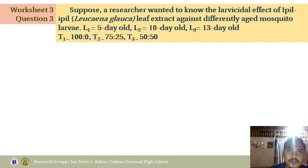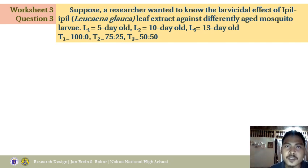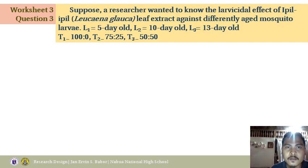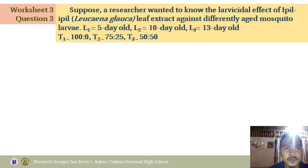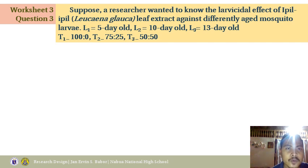Now for the last question: suppose a researcher wanted to know the larvicidal effect of ipil-ipil leaf extract against differently aged mosquito larvae. There are 3 age variations: 5-day old, 10-day old, and 13-day old. Three treatments are used — T1 at 100%, T2 at 75:25, and T3 at 50:50. This problem requires blocking by age, unlike the previous two questions.